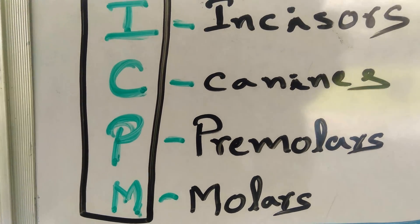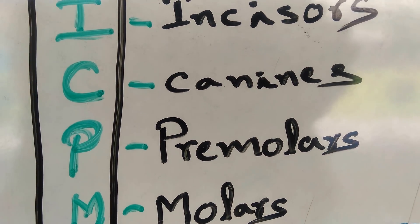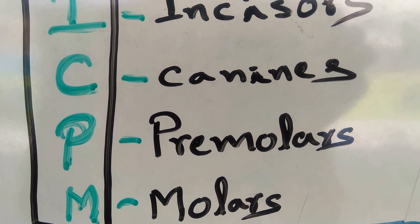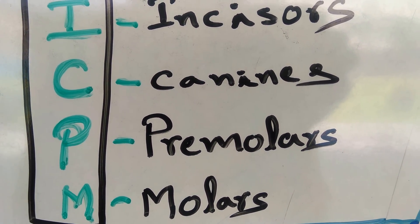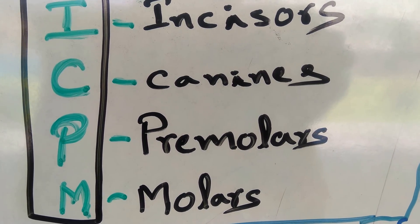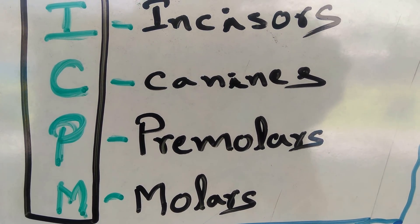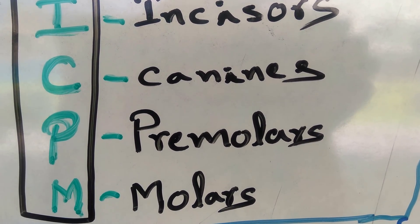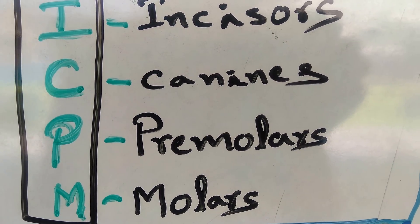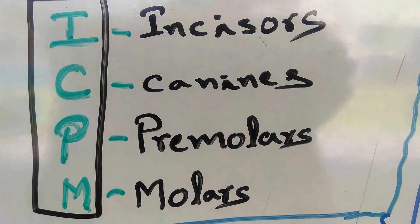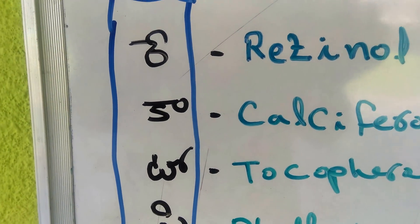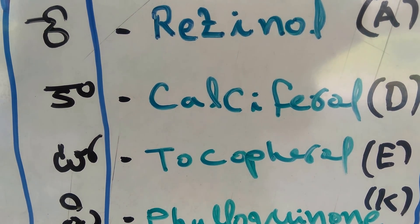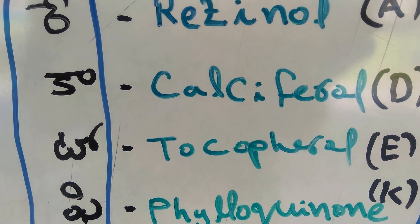The second one is ICPM — incisors, canines, premolars, and molars. There are four types of permanent teeth in the human buccal cavity. To remember their order, use ICPM. By remembering this we can easily recall the formula 2-2, 1-1, 2-2, 3-3.